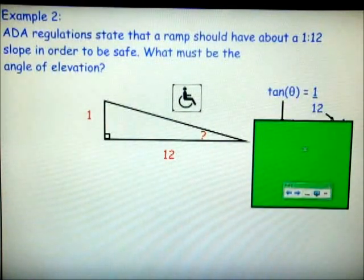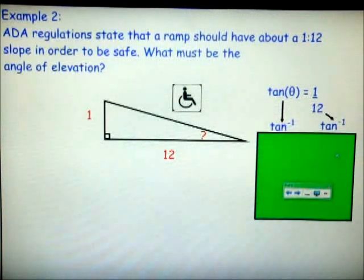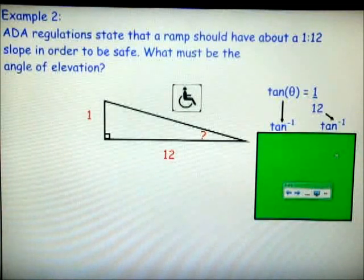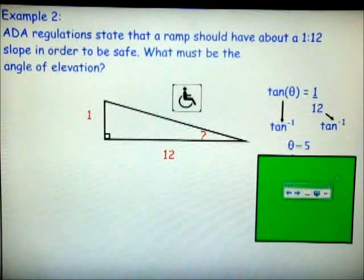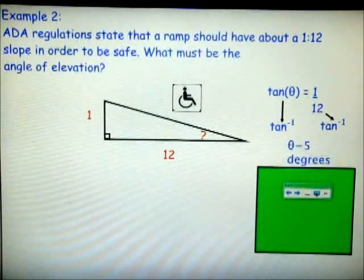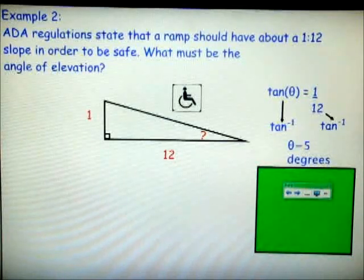Now, in this case, we're finding the angle. And right now, we should be pretty good about figuring out what the theta is going to be. So we want to use the inverse tangent, or second tan, to find our answer. Once we find the inverse tangent of 1 divided by 12, we come up with a theta is 5 degrees, a pretty small angle of elevation.